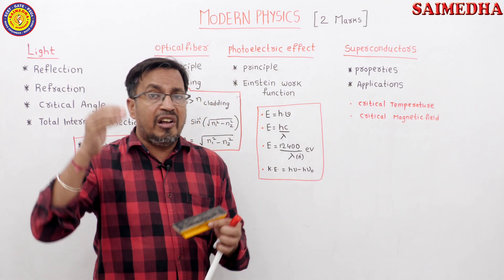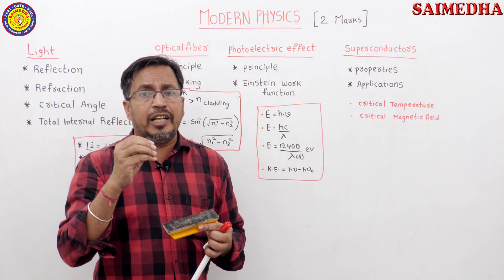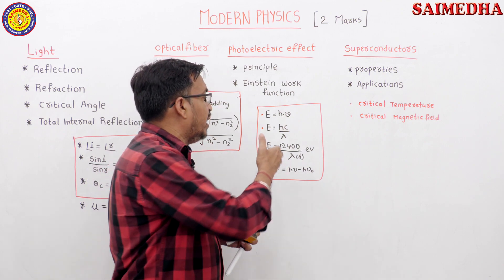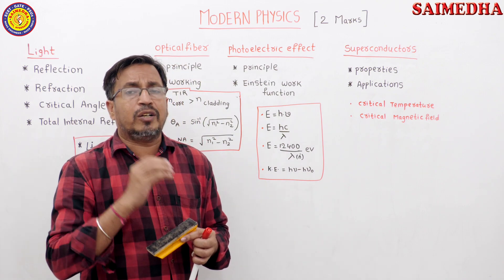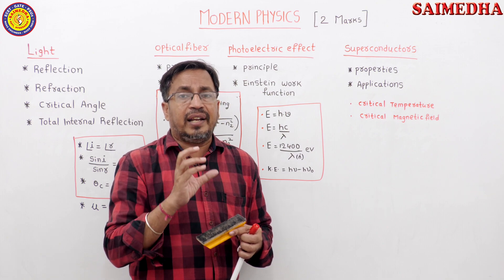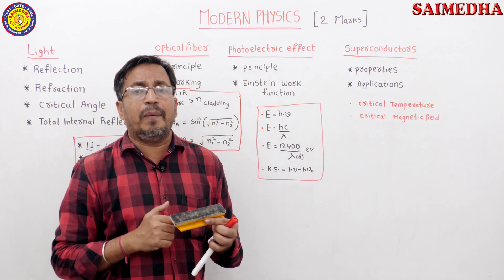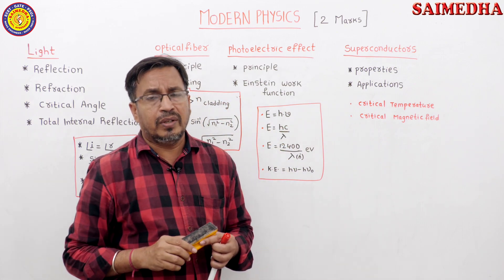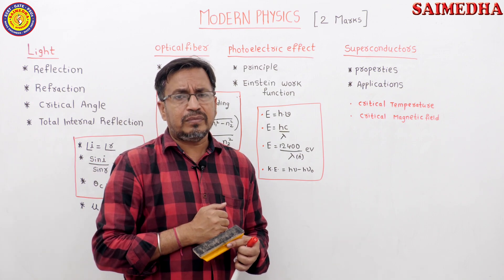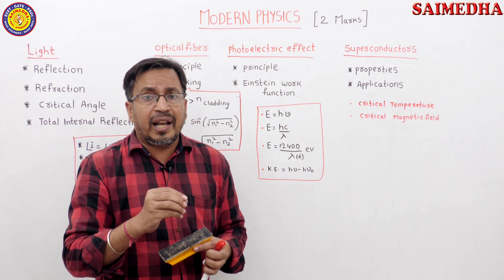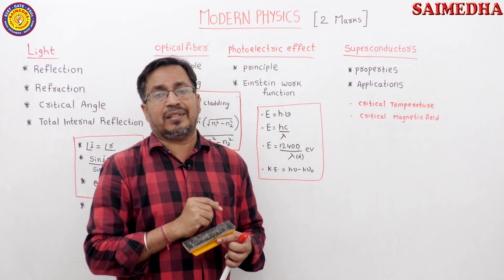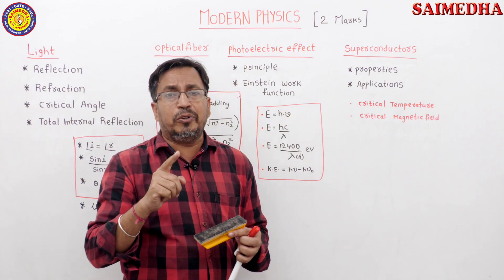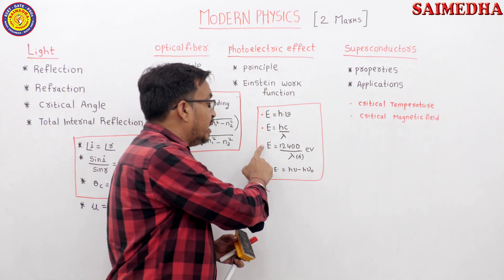Energy depends on frequency and wavelength. Energy is directly proportional to frequency of incident light. E directly proportional to mu. From c equal to mu lambda, we get E equal to H C by lambda, and E equal to 12400 by lambda electron volts.